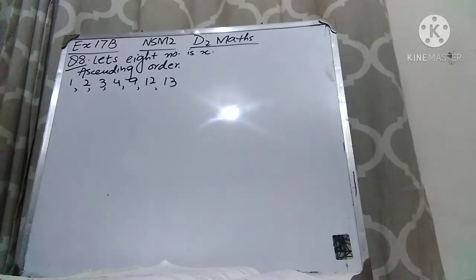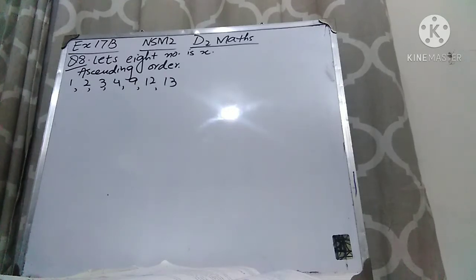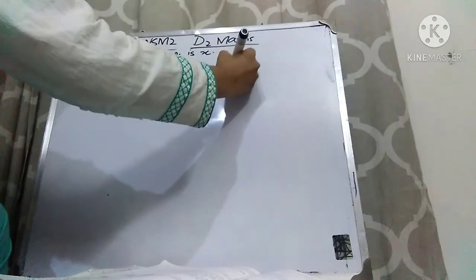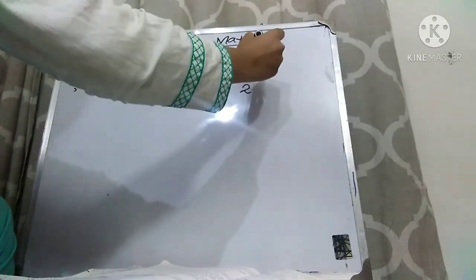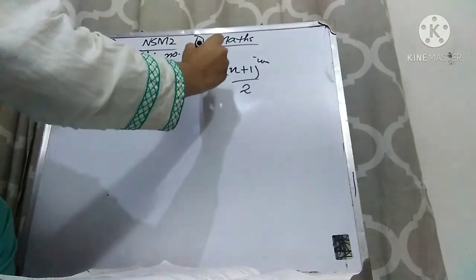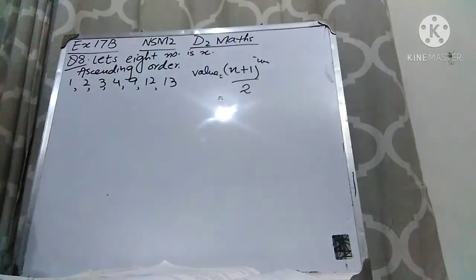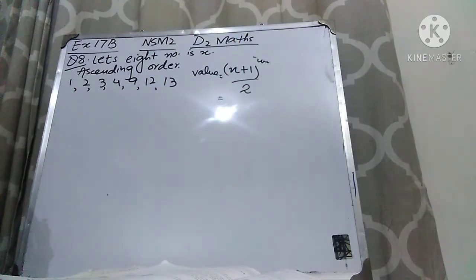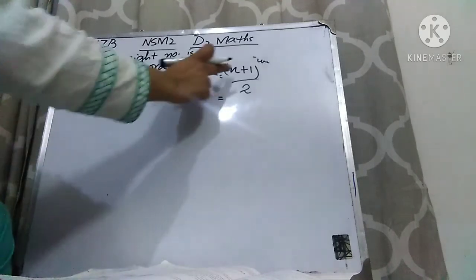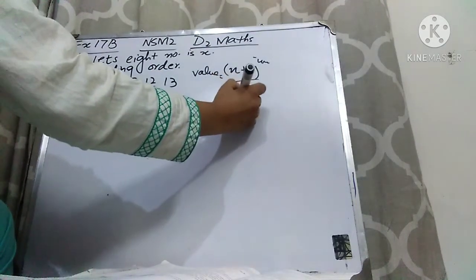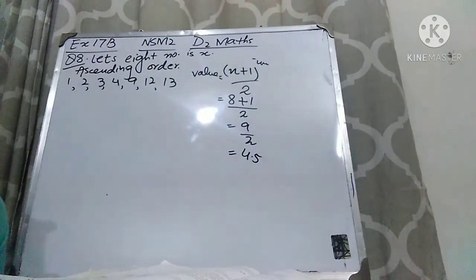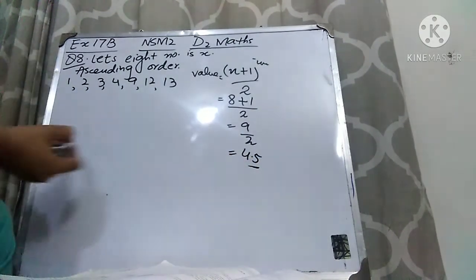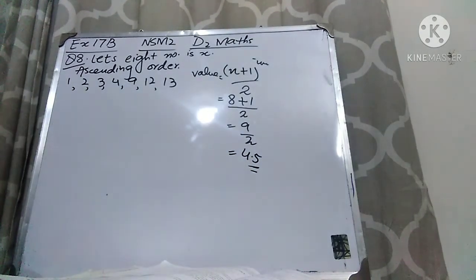First we have to find out where the median lies. For the median, you have to find out the nth value using the formula (n+1)/2. Here n is the total number of values, which is 8. So we put 8 plus 1 over 2, we get 9 over 2, which equals 4.5. It means that the median lies between the 4th and 5th position.